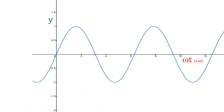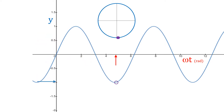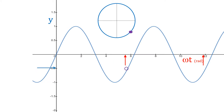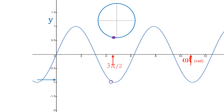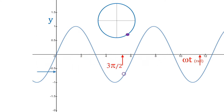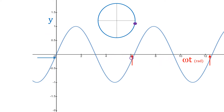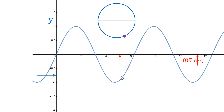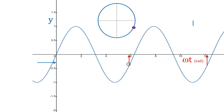Here's an animation that shows us how y changes as the angle increases, the angle being omega t in radians. Half a period is pi radians and a full period is 2 pi radians. At the top we have the unit circle spinning around, showing the tip of the hypotenuse tracing the sine wave.